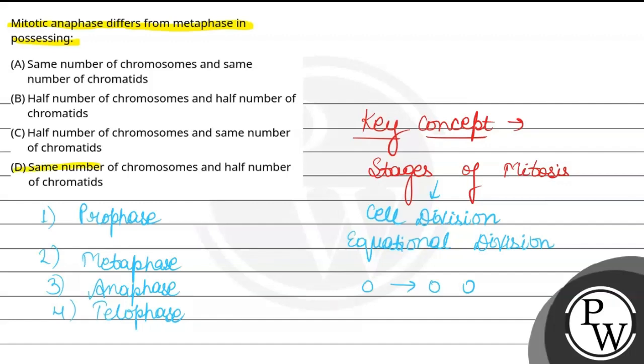So the final answer is D, that is same number of chromosomes and half number of chromatids. Hope you understood it well. Best of luck.